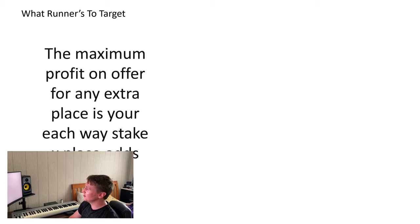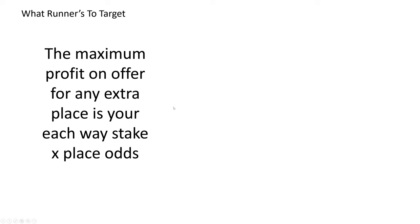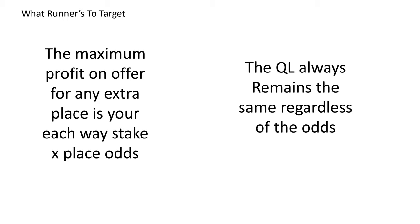When doing extra places, the maximum profit on offer for any extra place is your each-way stake multiplied by your place odds. That is split between your potential profit and your qualifying loss. If you get a 100% match you'll have the full profit on the potential profit side; at 0% match the full loss sits on the qualifying loss side. Importantly, the qualifying loss remains the same regardless of back odds, given the same match percentage.